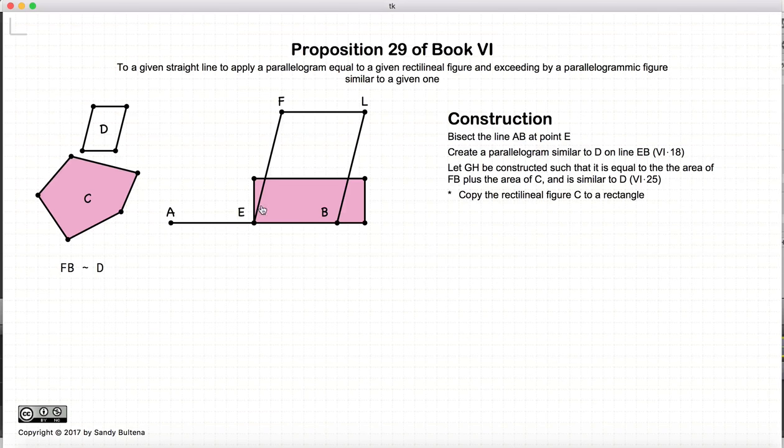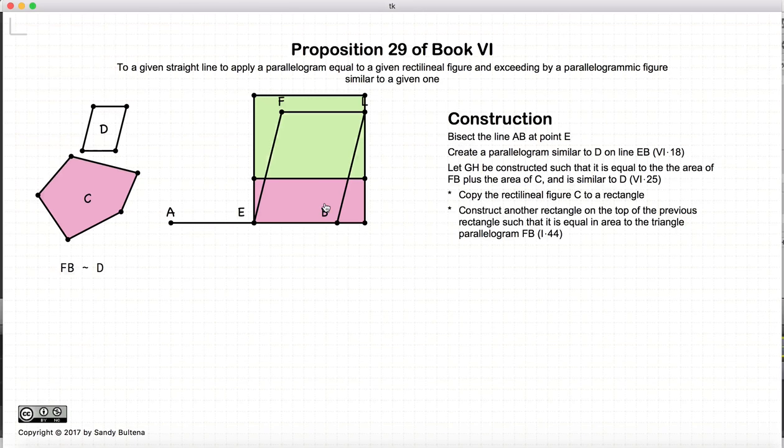First thing I do is construct a rectangle that is equal in area to C. Then I'm going to draw another rectangle on top of this line that is equal in area to FB. And now I'm going to take this total area from here to here. So the total area now is equal to FB plus C.